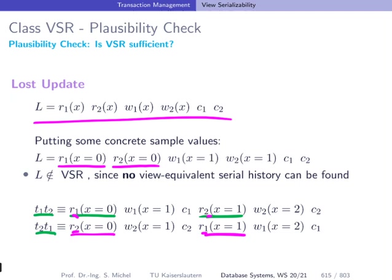Now in any case, here we are reading 0, 0, and here we have a mixture of 0 and 1, so it's clear that the reads are not the same as for L. That means none of these two serial schedules is equivalent, view equivalent to L, that means L is not in VSR.